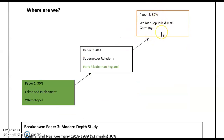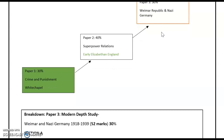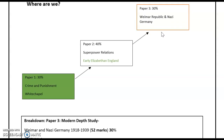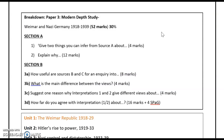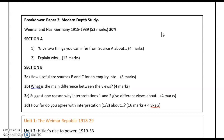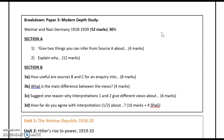We are looking at Paper 3, which is worth 30% of your GCSE, and this exam paper lasts one hour twenty minutes. There are two sections to this paper with a combined total of 52 marks. Section A is worth 16 marks and should take roughly 20 minutes. Question 1 is a four-mark inference question, and Question 2 is an explain why, worth 12 marks, similar to the crime and punishment paper. Section B analyses sources and interpretations, worth 32 marks, plus four marks for spelling and grammar, and should take approximately an hour.